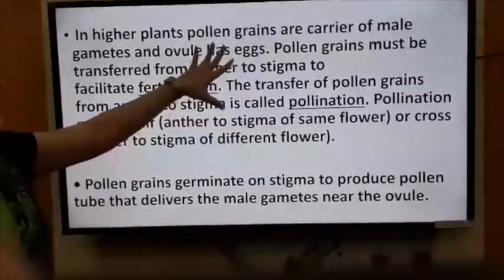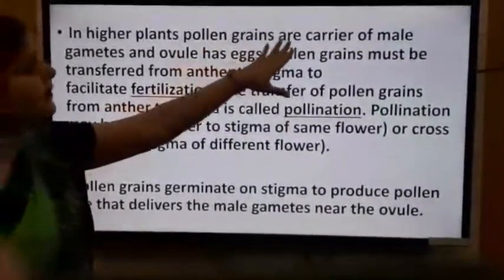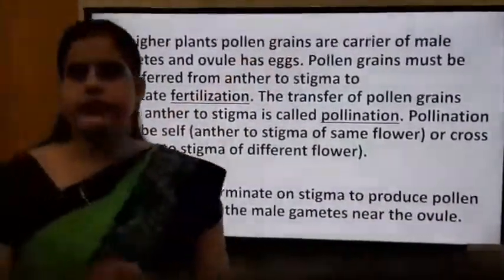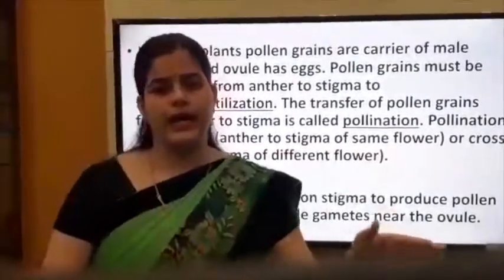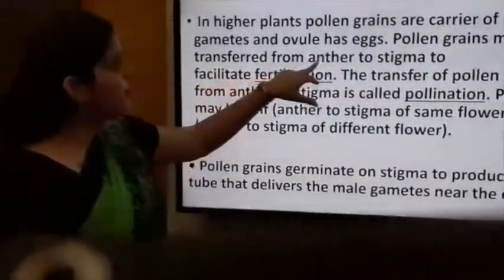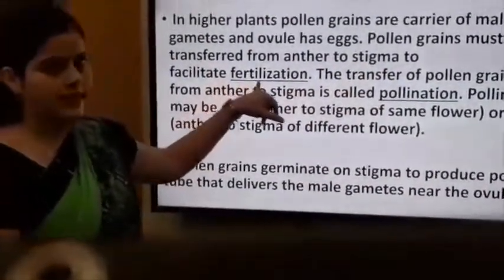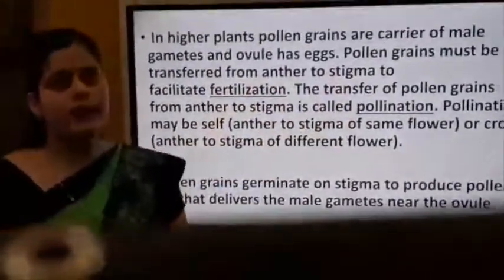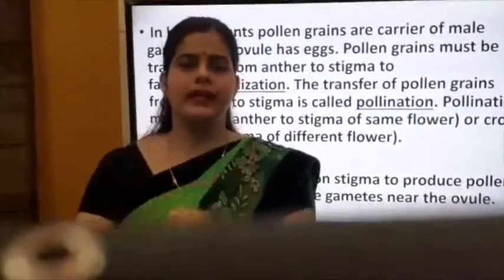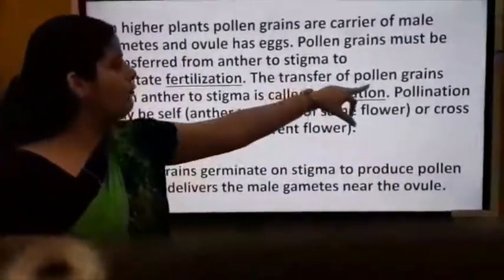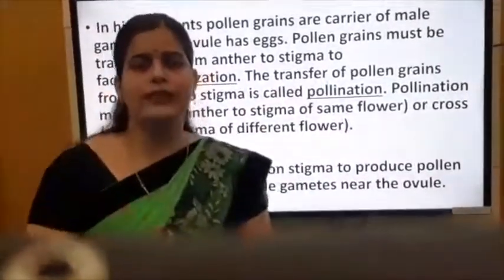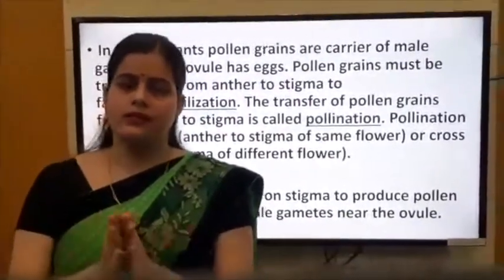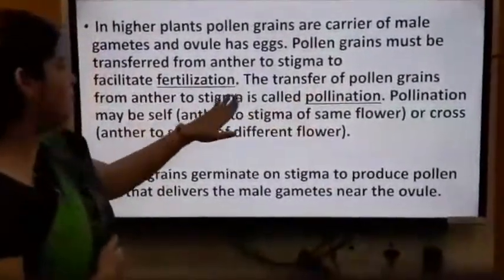Pollen grains must be transferred from anther to stigma to facilitate fertilization. The transfer of pollen grains from anther to stigma is called pollination. Pollination is of two types: self-pollination, when transfer occurs within the same flower, and cross-pollination, when pollen is transferred from one flower to the stigma of a different flower.